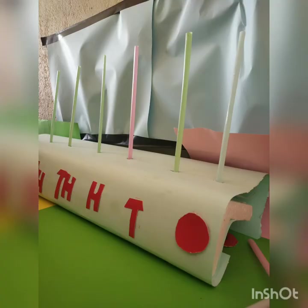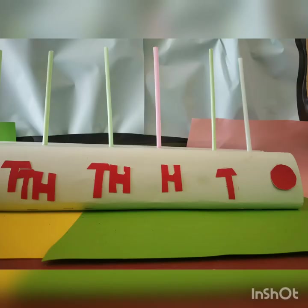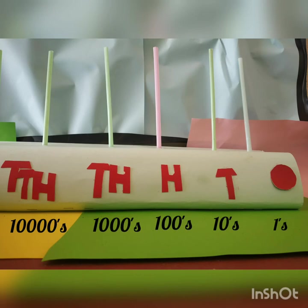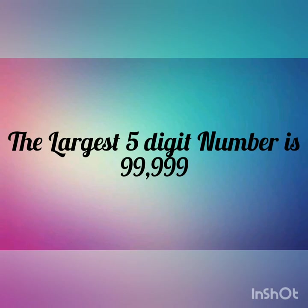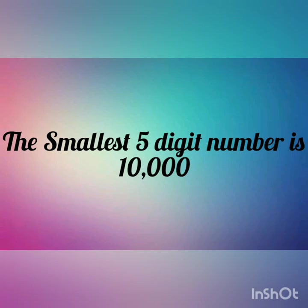The rods in the Abacus represent the digits and places. The first column from the right represents 1s, the second column is 10s, the third column represents 100s, the fourth column represents 1000, and the fifth column represents 10,000. These are the first 5 places of the digits. The largest 5-digit number is 99,999, and the smallest 5-digit number is 10,000.